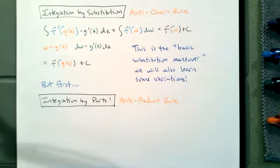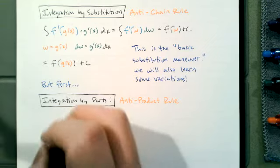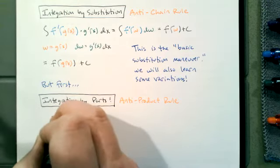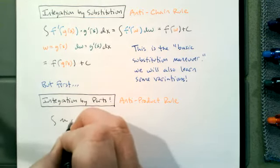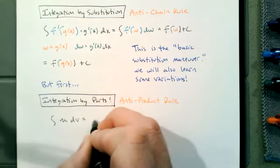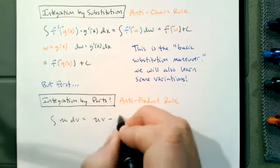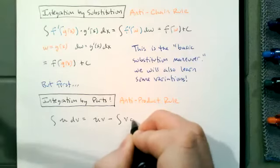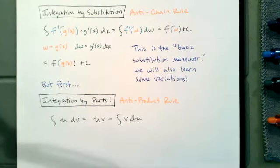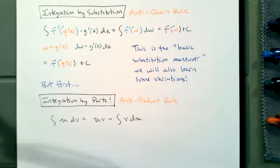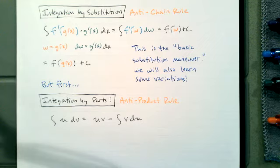The good thing about integration by parts is that there is just a formula to remember: the integral of U dV equals UV minus the integral of V dU. This is the integration by parts formula. So there's the good thing — we have a formula. There's also the bad thing: there's a formula for integration by parts.